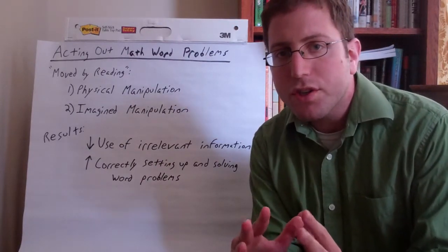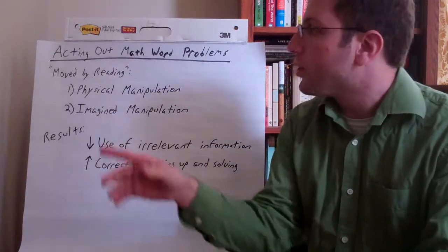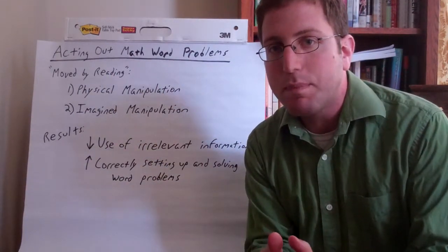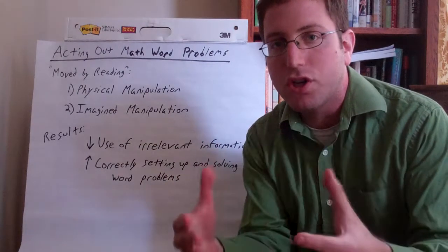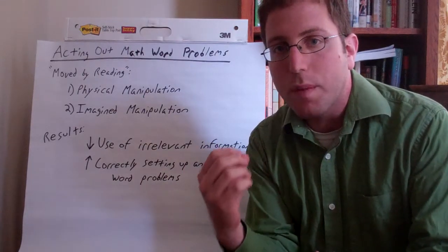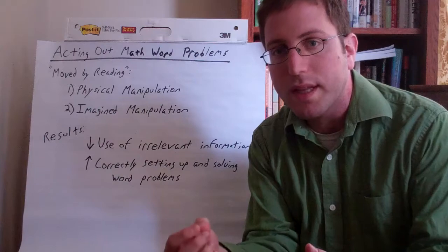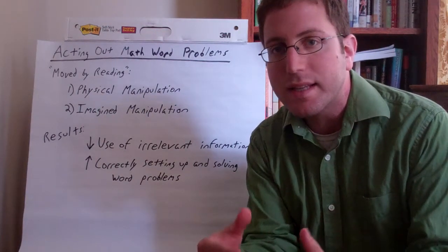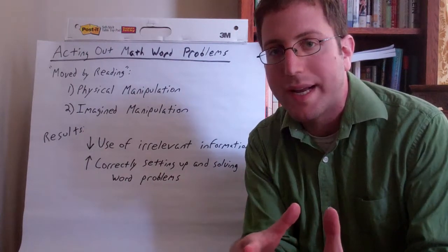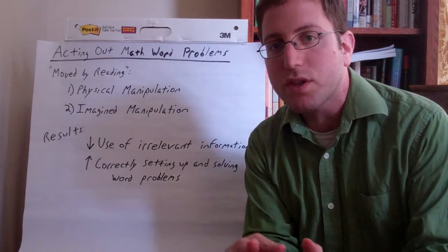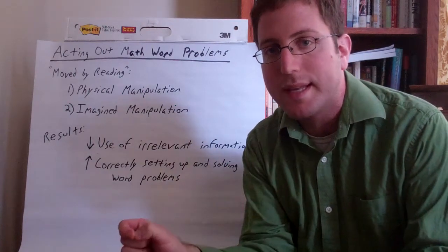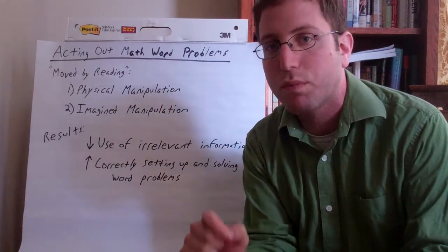The strategy the authors talk about is called moved by reading, and it's actually originally a reading comprehension strategy. The idea is building in physical manipulation of objects as a way to help students visualize and concretely see what's going on in text. This was originally started as a reading comprehension strategy, but the authors of this article did a study to ask can this be applied across domains into math, specifically into math word problems.